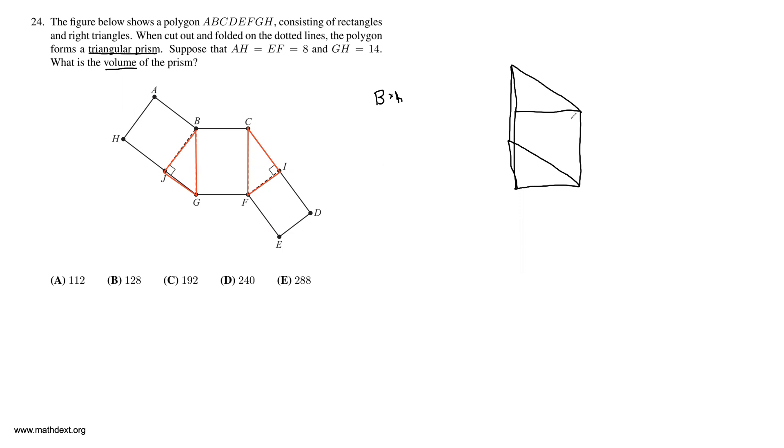Okay, so our bases are BGJ and CIF. And we're given a few side lengths: AH is 8, EF is 8, and GH is 14. And you see that since ABJH is a rectangle, BJ is 8. And since EFID is a rectangle, ID is 8. But how is that going to help us find our base or our height for that matter?